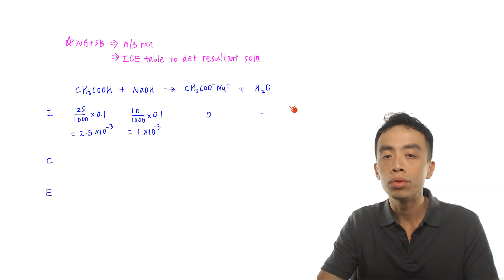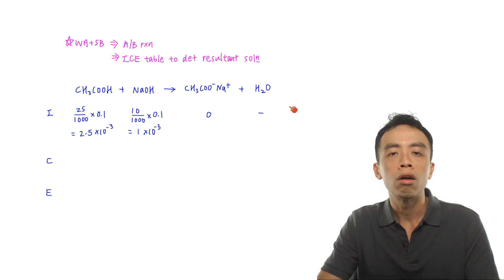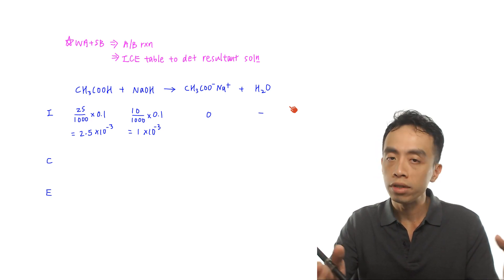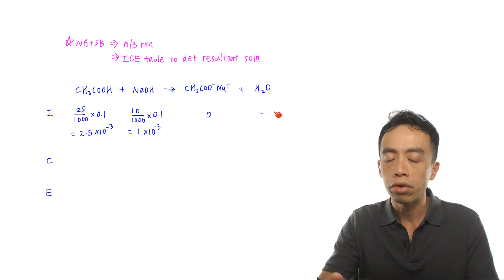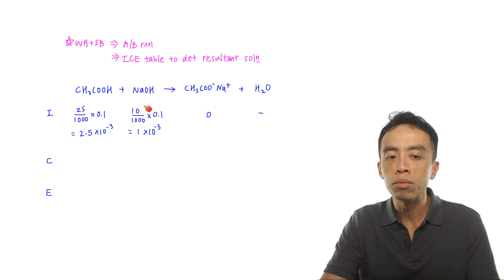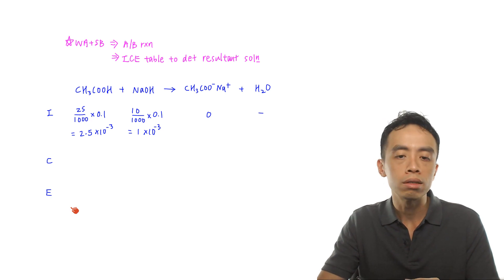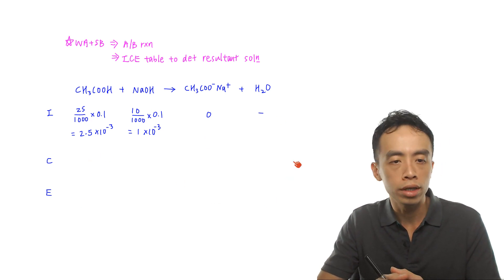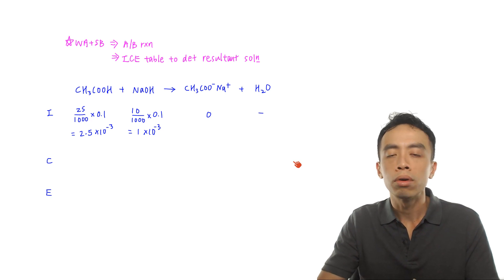My preference is to use the ICE table to determine the resultant solution. The ICE table is a tabulated presentation of moles — instead of statement form, we write everything into a table, which is more concise. I stands for initial moles, C is for change, and E represents the end of the reaction. It is highly recommended in ionic equilibria for acid-base reactions.